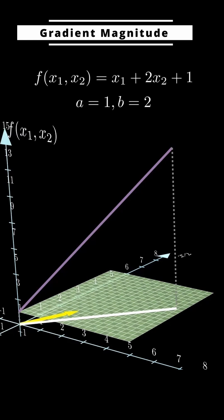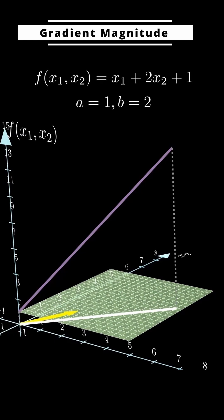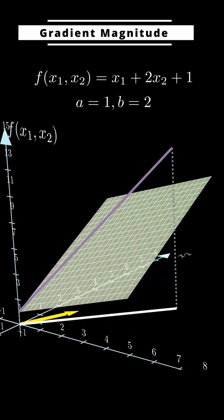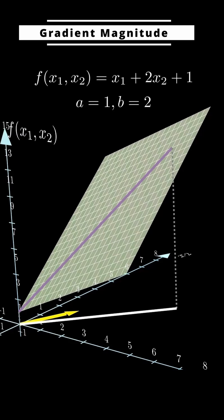But in multivariable functions, you can draw lots of different lines on the surface, and each one has a different slope. Among all those, the steepest one is the gradient direction, and the size of the gradient vector is the slope in that direction.